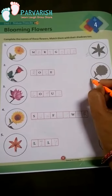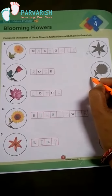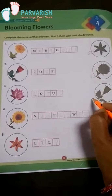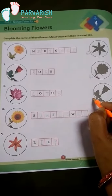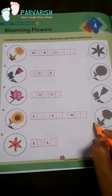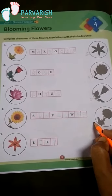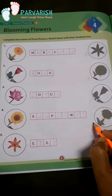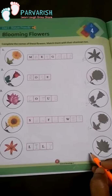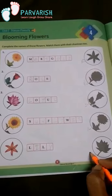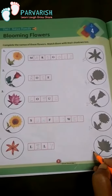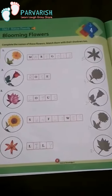Next — number 4, Sunflower. Next — number 2, Rose. Next — number 1, Marigold. And last — number 3, Lotus.